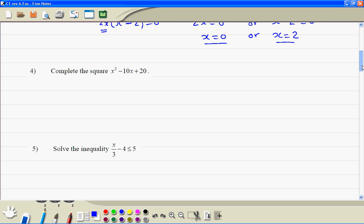Number 4, complete the square. So write the x, start the bracket, always close the bracket, and always the square sign, and you have a minus sign here. Now, half of 10 is 5, because the minus sign is minus 5.